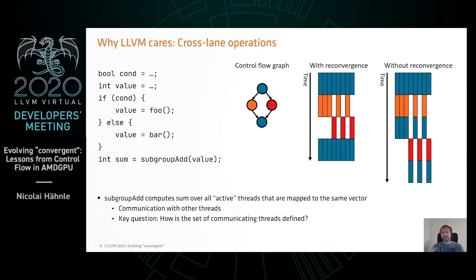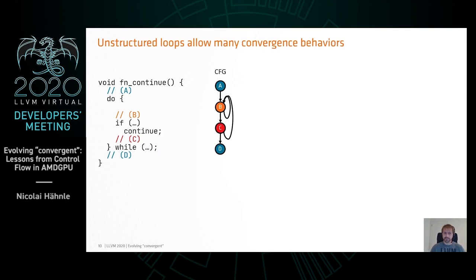In a simple case you could say we should always have reconvergence, and that's actually an argument we're making. But things get more complicated with loops. Here's a high-level language loop which in a simplified form has a control flow graph with two back edges — it's not in normal form, but we need to be able to make statements about arbitrary IR, so we can't just rely on a normal form.